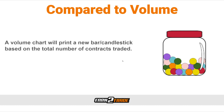Comparing volume charts to tick charts is a lot more similar than comparing tick charts to time charts. Volume charts take into account the number of contracts traded, just like tick charts take into account the number of transactions that have occurred. It really comes down to which point of information is going to best suit you as you're gaining your reads on the market. It is very common for traders to use both volume and tick charts in conjunction with each other at the same time.